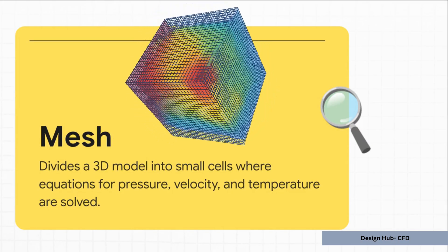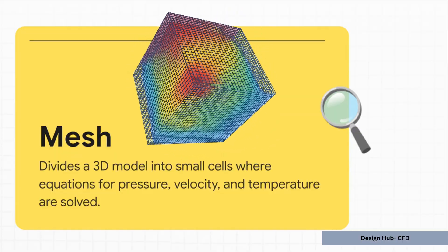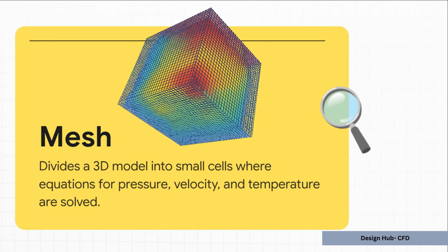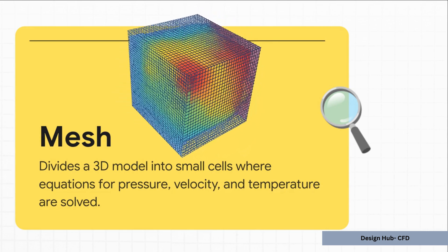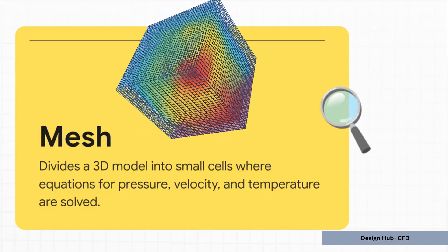The best way to think about a mesh is to compare it to the pixels in a digital photo. If you have too few pixels, what do you get? A blurry, blocky, unrecognizable image. It is exactly the same in CFD. A coarse, clunky mesh gives you a fuzzy, inaccurate picture of the physics. But a fine, detailed mesh? That gives you a sharp, trustworthy result.